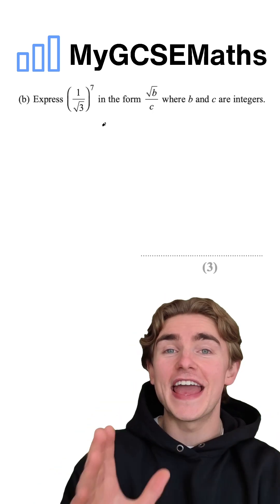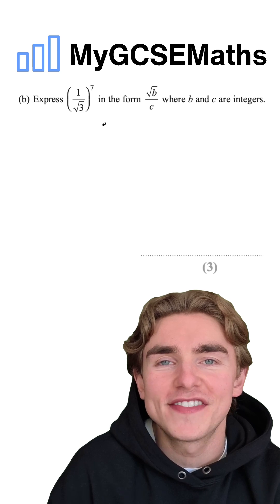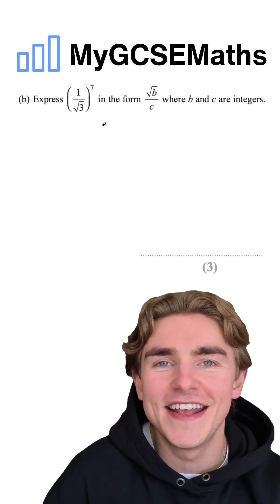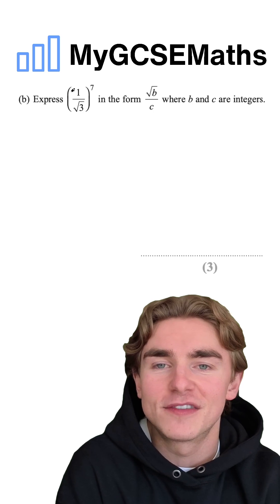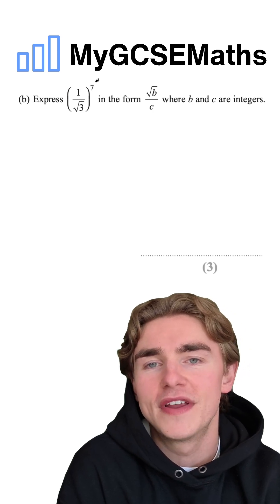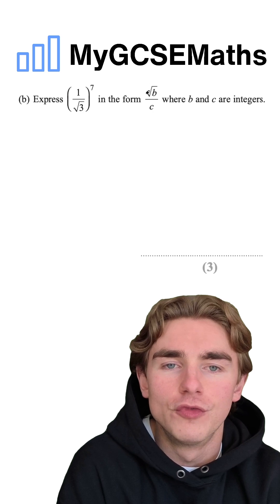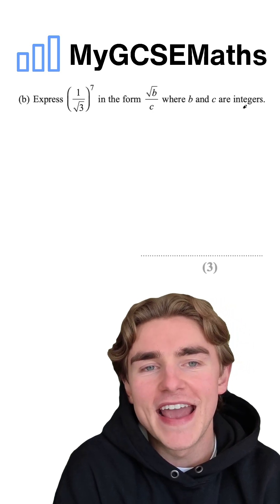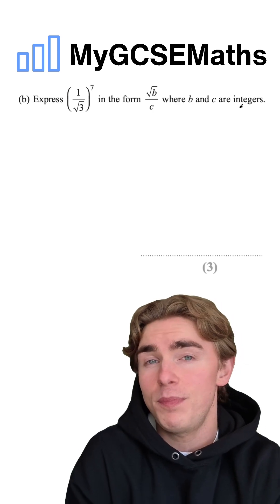This one is definitely a pretty tricky problem-solving question. Pause the video now and see if you can do it. The question says: express 1 over the square root of 3 to the power of 7 in the form root b over c, where b and c are integers. What do we think?